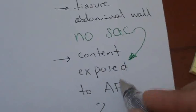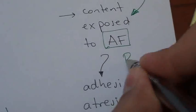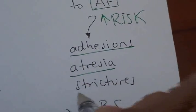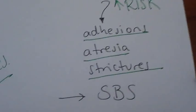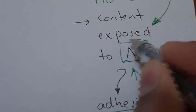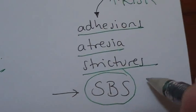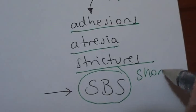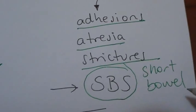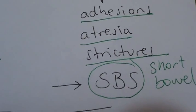What does it mean? The content will be exposed to abdominal fluid. And we have increased risk for adhesions, atresia and strictures. And also, the problem here is that since this intestinal content is exposed to abdominal fluid, we have to resect some portion. So the problem is the short bowel syndrome that we will have at the end. It depends the portion of the intestine that has to be removed.